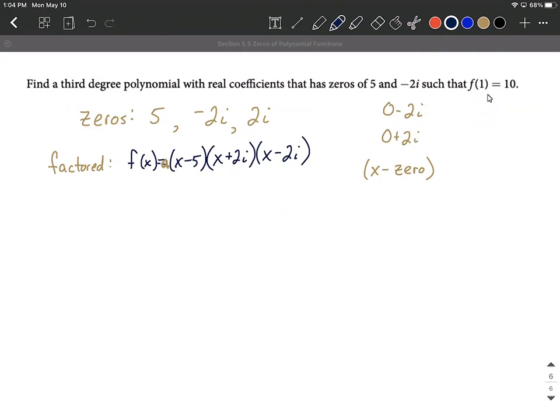So to account for that and find exactly what a is going to be, let's plug in this additional information. So I'm going to put 10 in for f of x and 1 in for each of our x's. So we have 10 for f of x, a times 1 minus 5, 1 plus 2i, and 1 minus 2i. So replaced 1 in for each of our x's and 10 in for f of x.